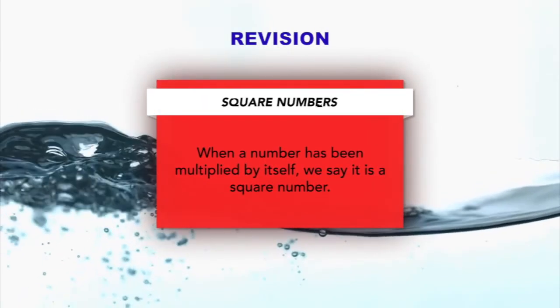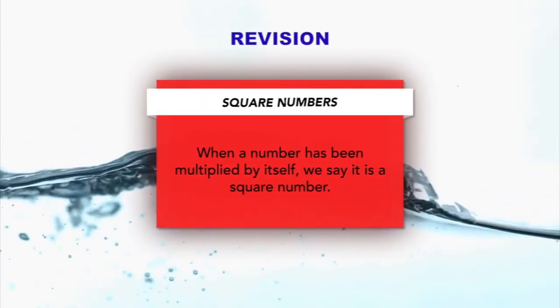And square numbers again. When a number has been multiplied by itself, we say it is a square number.